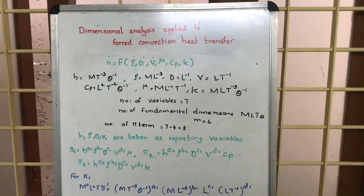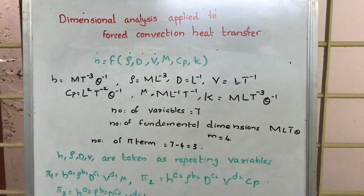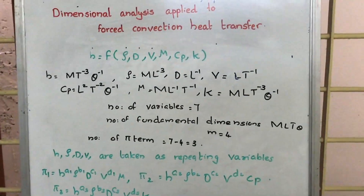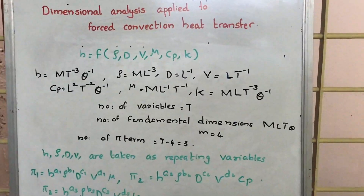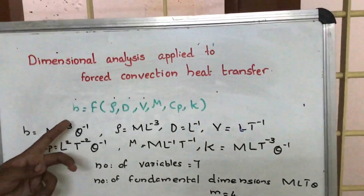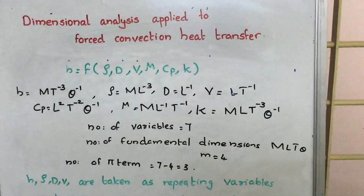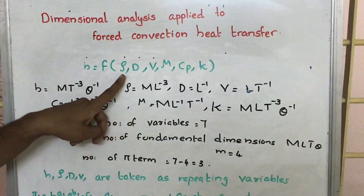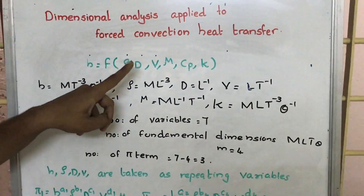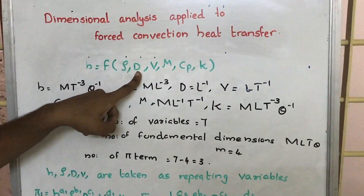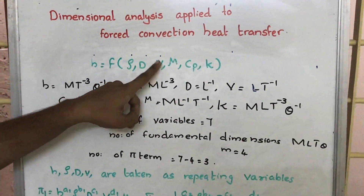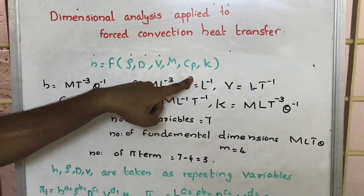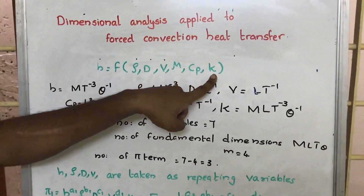We are going to do the dimensional analysis for forced convection heat transfer. H is the heat transfer coefficient and it is written as a function of density, diameter, velocity, mu dynamic viscosity, Cp specific heat, and conductivity K.